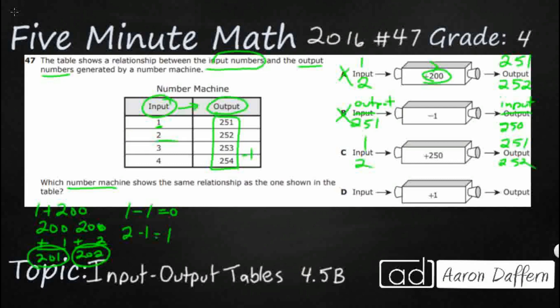So, let's go ahead and line it up, 250 plus that 1 that's input, 251. Check. So, 250 plus our 2 input is, yes, 252. And we can visually see that if we do a 250 all the way down as our number machine, we are definitely going to get what we're looking for. We just take our input, and we add 250.